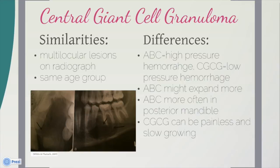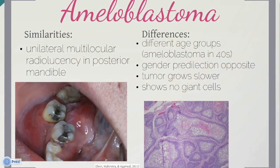Clinically, the difference between the two diseases is that ABC is due to high-pressure hemorrhage, while central giant cell granuloma is due to low-pressure hemorrhage; therefore it is uncertain whether the two are indistinguishable. The textbook states that aneurysmal bone cysts might expand to a greater degree and appear more often in the posterior region of the mandible than giant cell granulomas. CGCG can be painless and/or slow-growing, which can differentiate the lesion from ABC. Ameloblastoma is another differential because it appears as a unilateral multilocular radiolucency in the posterior mandible, but is more common in an older age group averaging 40 years old, has a slight predilection in men opposite to ABC, and grows slowly while ABC grows rapidly.